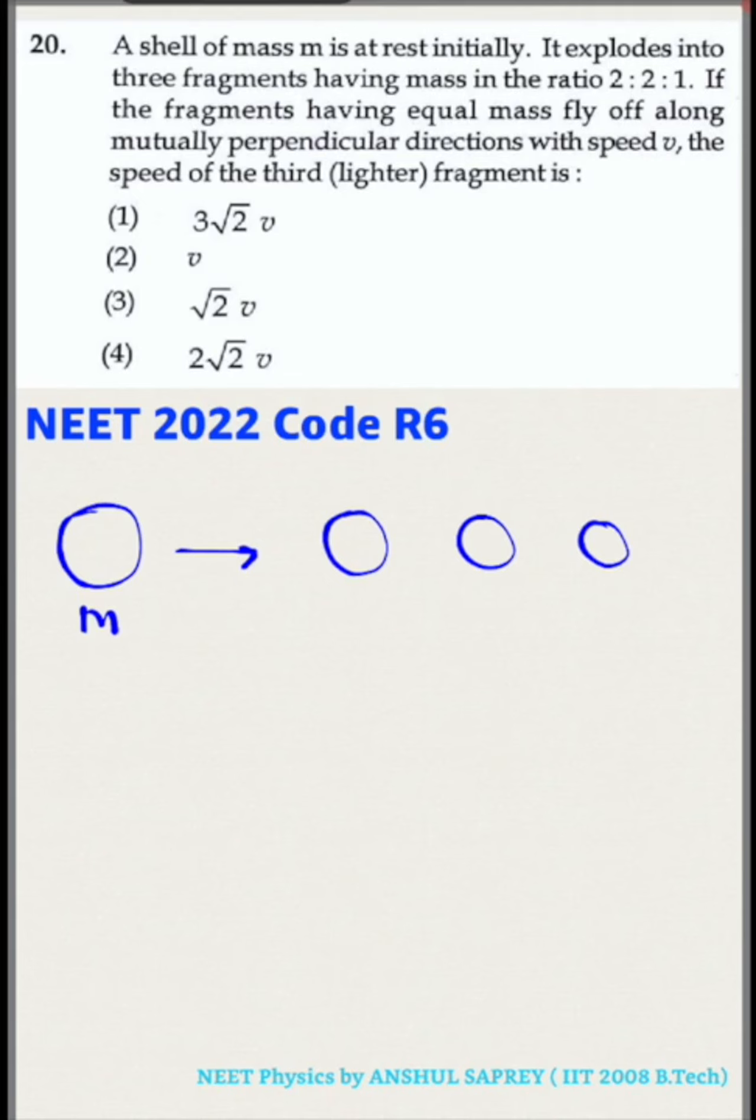Two parts given to first shell, two parts given to second shell, and one part given to last shell. So their masses are 2m/5, 2m/5, and m/5.